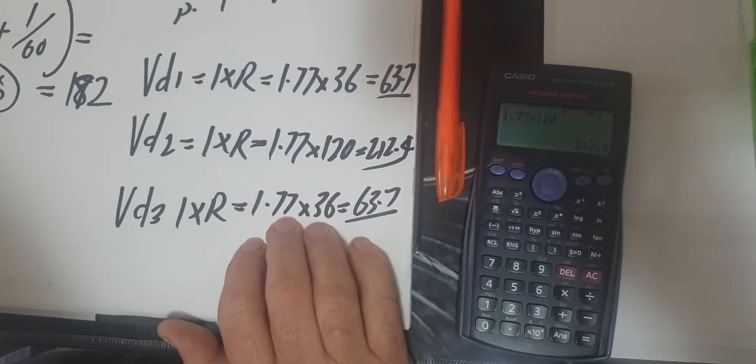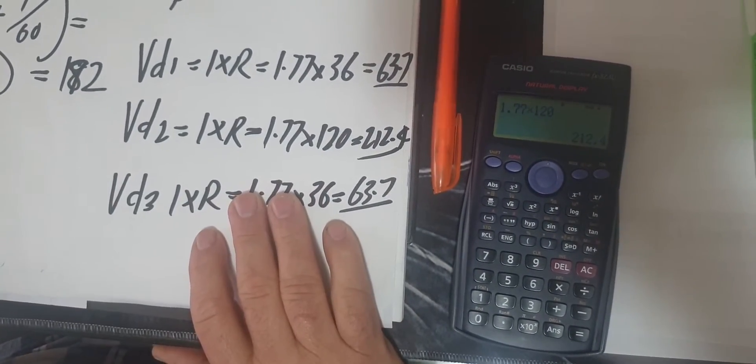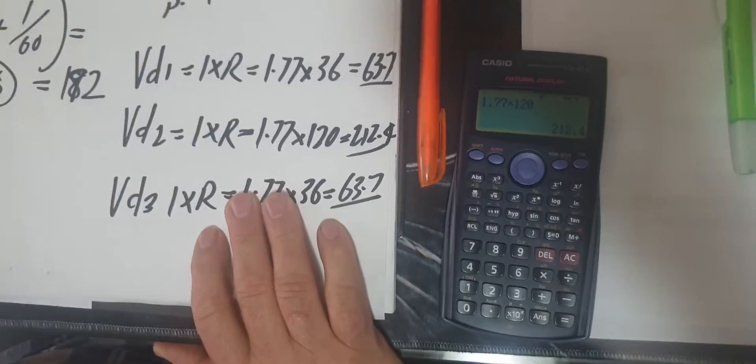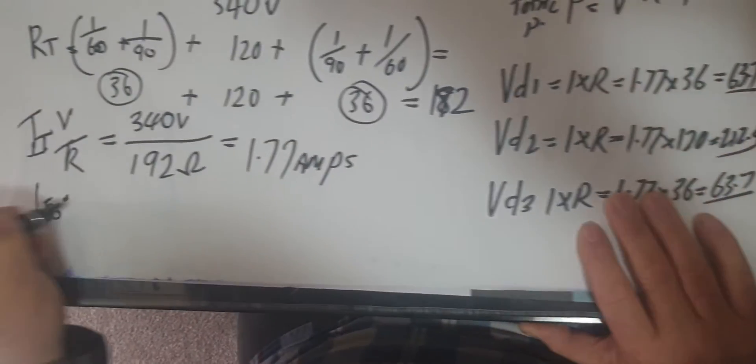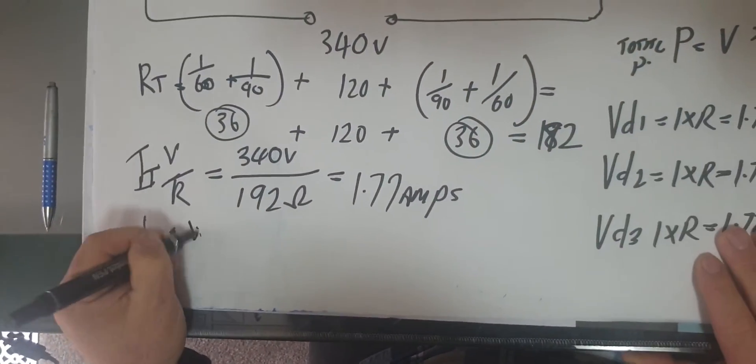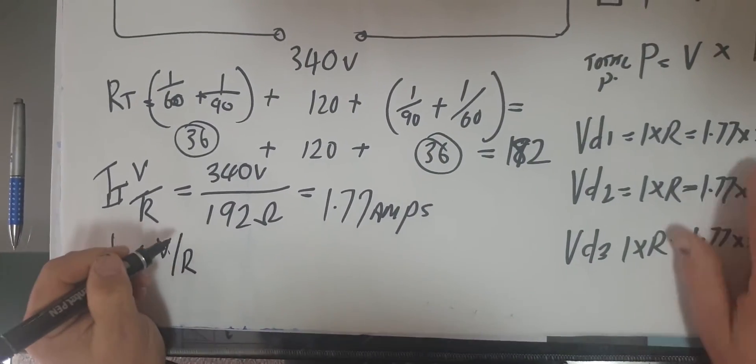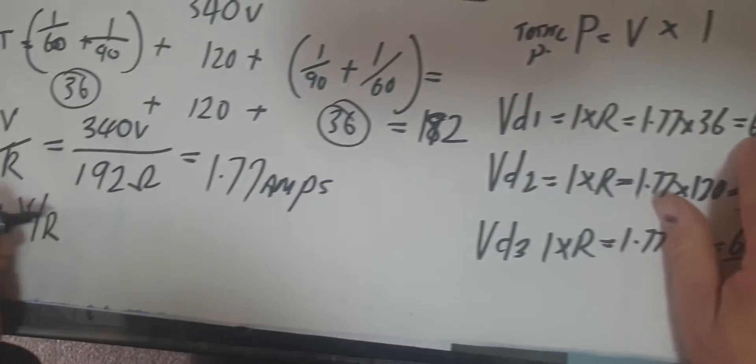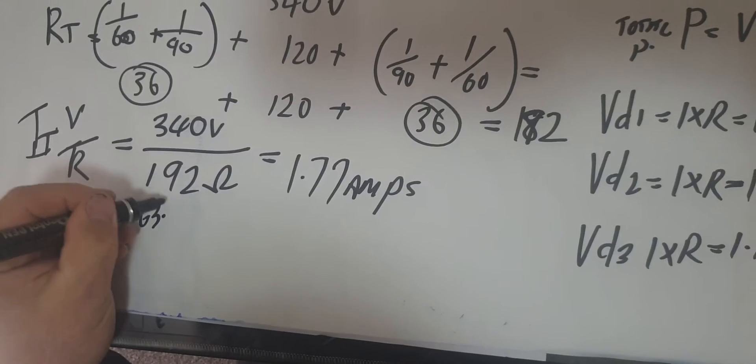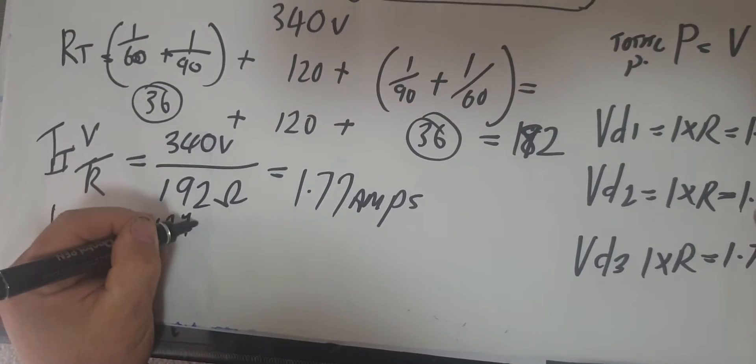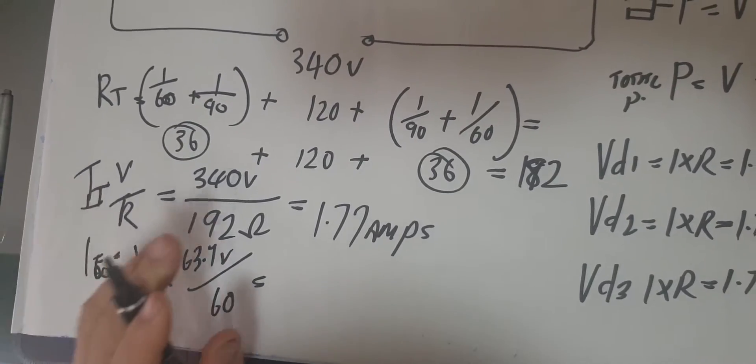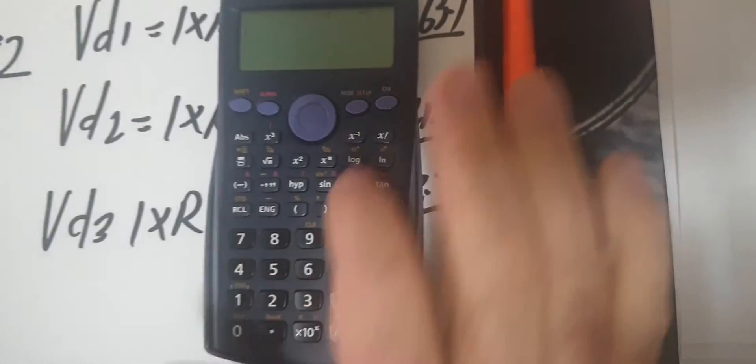What I'm going to do now is work on I equals - the voltage, the current through the 60 over here. So the current going through the 60 will be I equals V over R. So the voltage drop I'm going to use is 63.7 for the first resistor, first voltage drop, 63.7 volts divided by the resistor which is 60. So I'm going to get something like 1 amp.